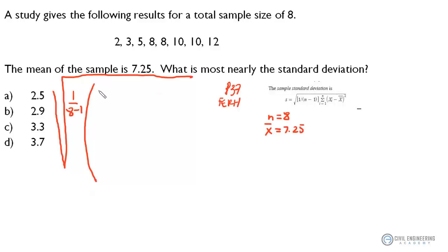each individual sample number. So, we're going to start with 2 minus the sample mean 7.25 squared plus the next term, which we know is 3 minus the sample mean squared plus the next term